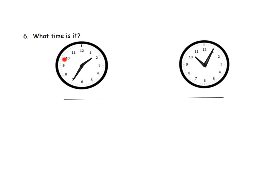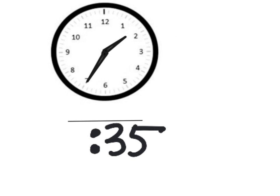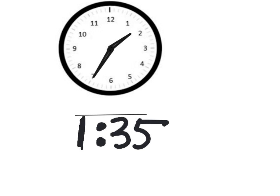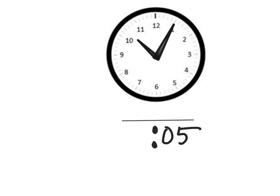These last two questions ask students to say what time it is. We look at the minute hand — it's at 35 — and the hour hand is a little bit past the 1, not quite 2, so we know the time is 1:35. On the last one, the minute hand is at the 1, which is 5 minutes, and the hour hand is a little bit past the 10 — so the time is 10:05.